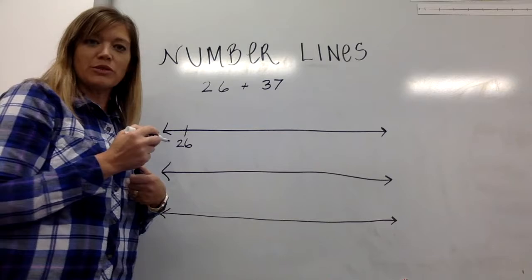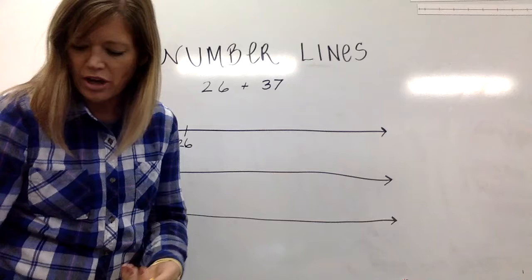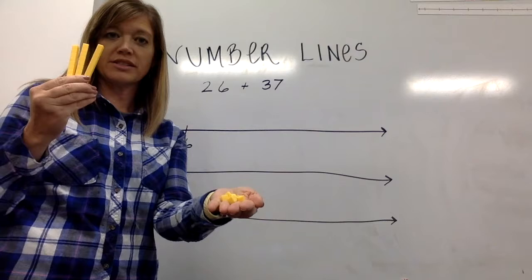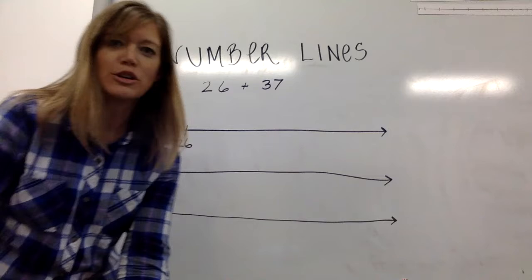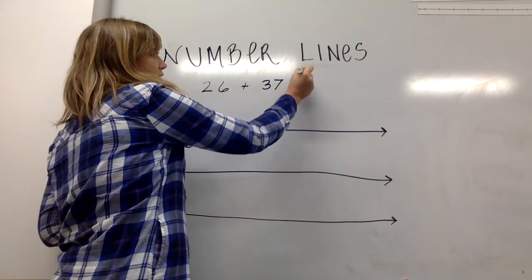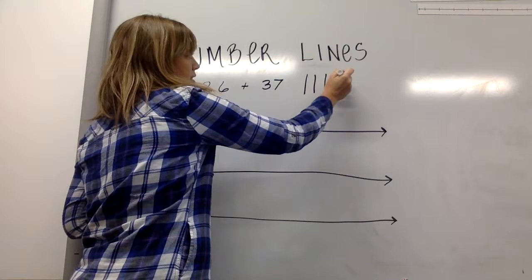So when we work with place value we learn what are ways that we can represent 37. We use manipulatives to show that 37 is made of three tens and seven ones and we can count out using physical manipulatives like these. We can also use pictorially drawings of our place value understanding 37 is three tens and seven ones.